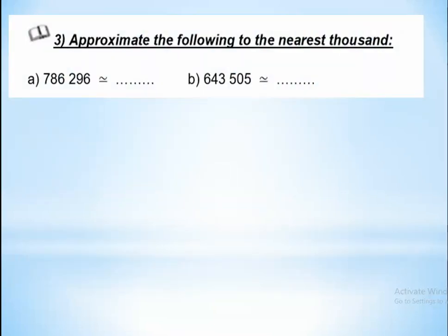Approximate to the nearest thousand: for 7,786, underline the thousands place — 7. Circle the next-door digit; it is less than 4, so keep 7 and replace the next-door digits with zeros, giving 7,000. For the next number, underline the thousands place — 3. Circle the next-door digit — 6 — which is 5 or more, so add one: 3 becomes 4. Replace the next-door digits with zeros.